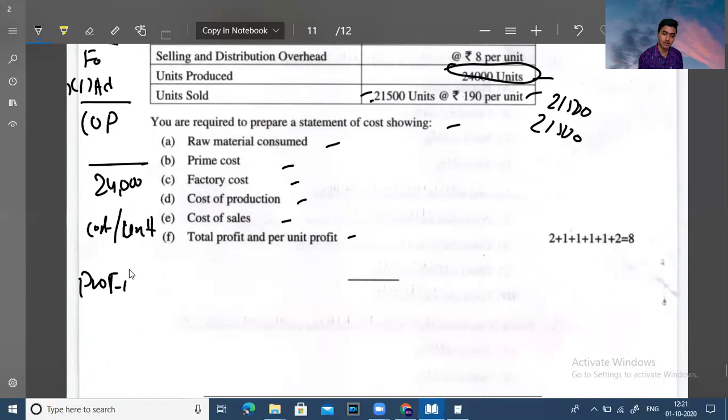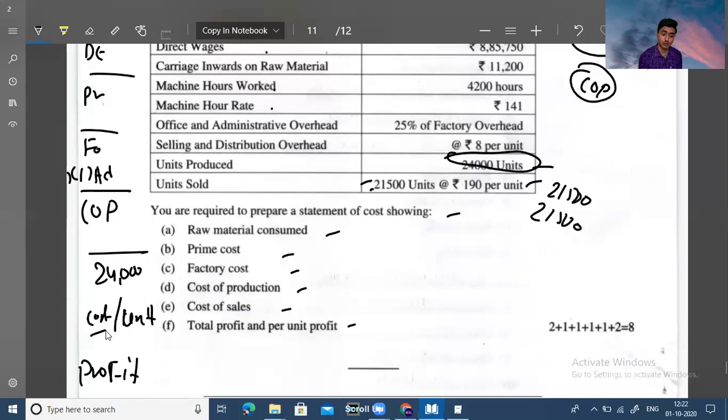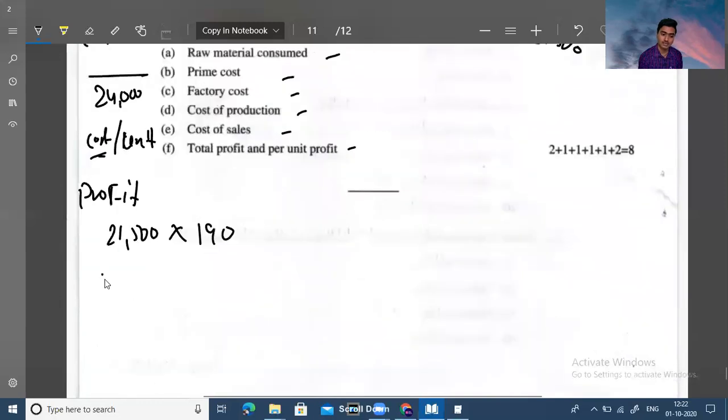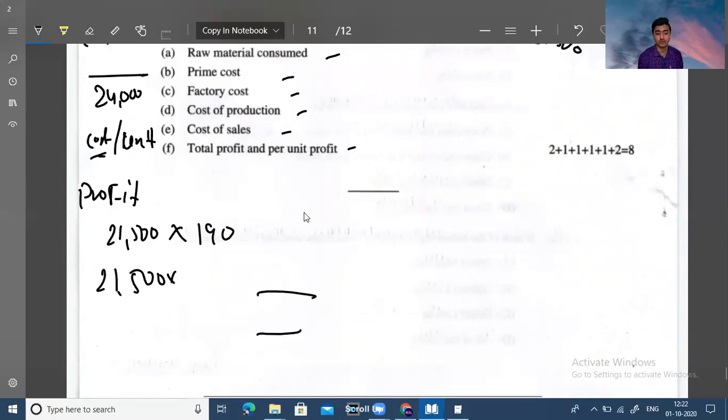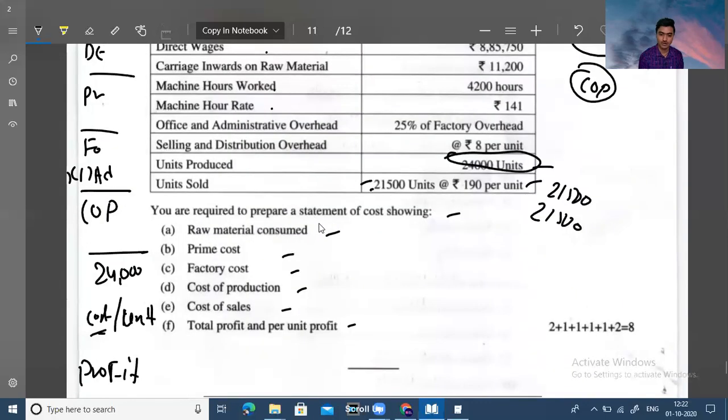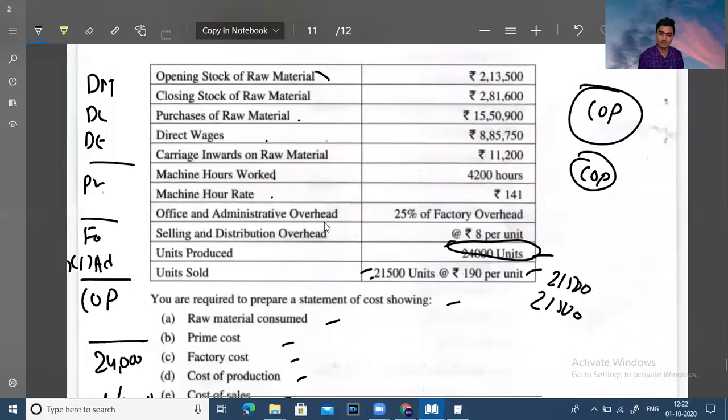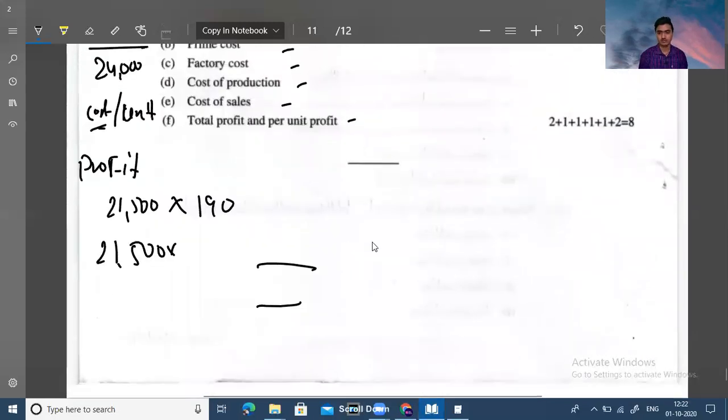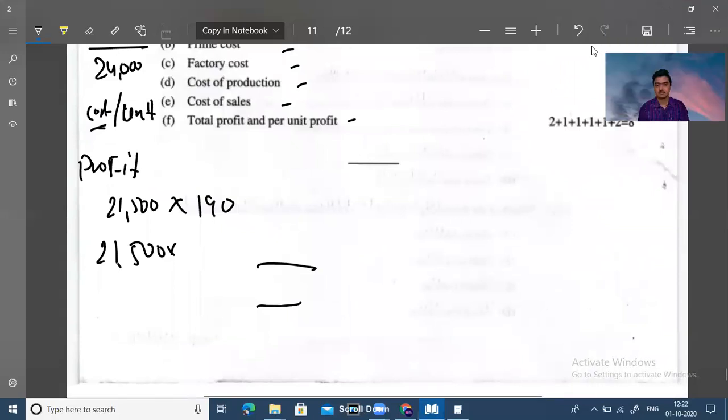Cost per unit. What do you have to do? Profit is calculated. So we will have to prepare the cost of production to calculate cost per unit.